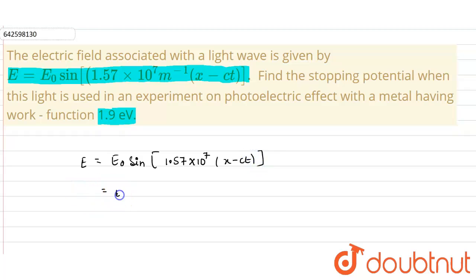What we can say is, it will be E0 sin 1.57 into 10 raised to the power 7 x minus 1.57 into 10 raised to the power 7 ct.